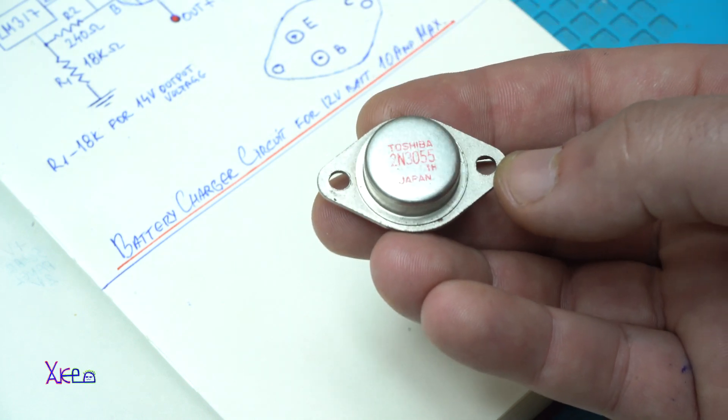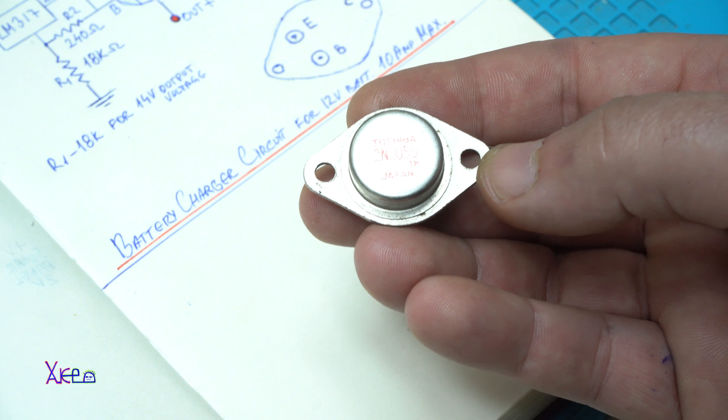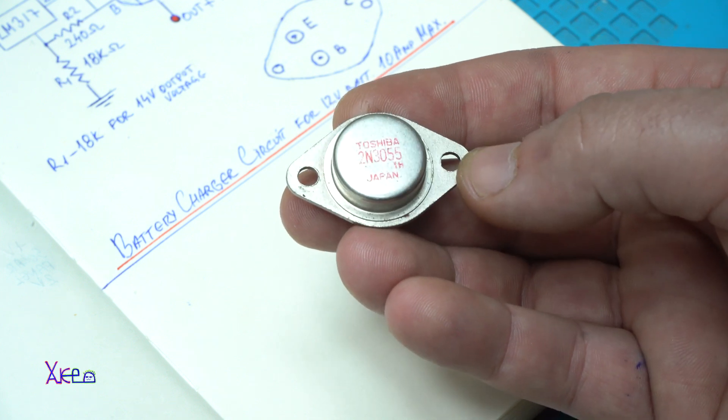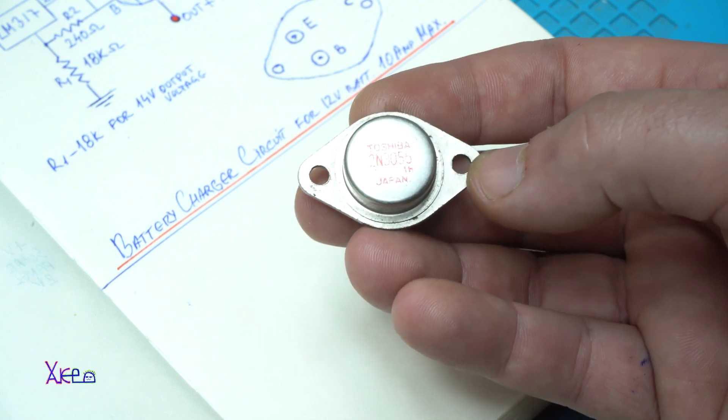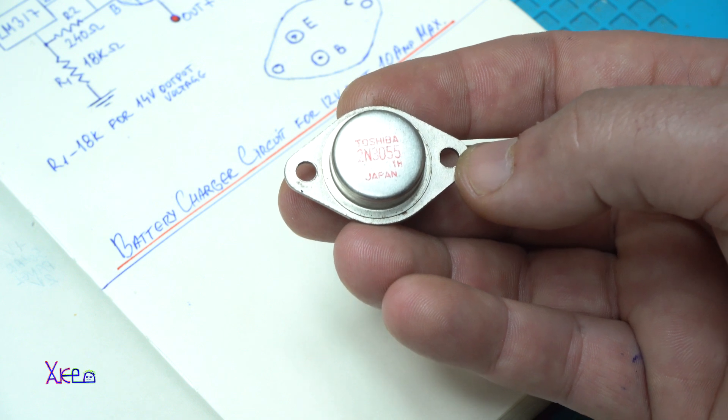Made in Japan. This is an N-P-N transistor 2N3055 that can handle up to 70 volts and can deliver 15 amperes.